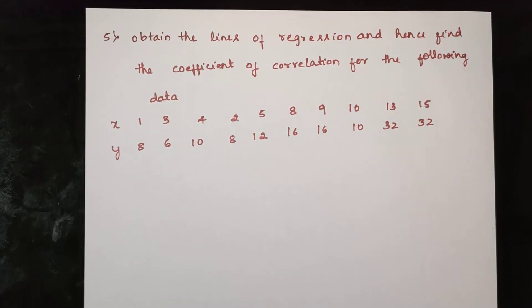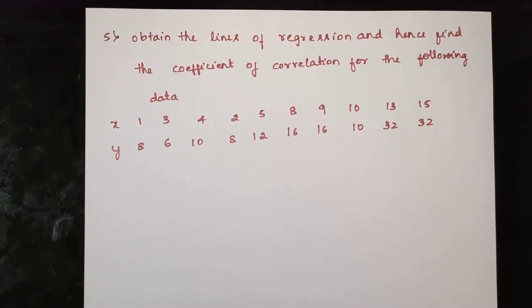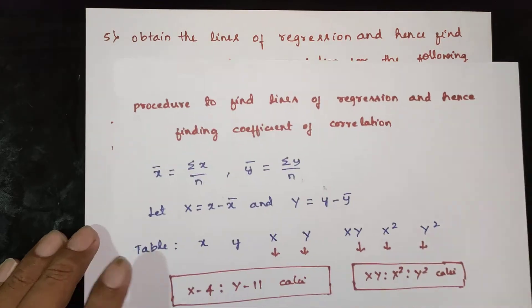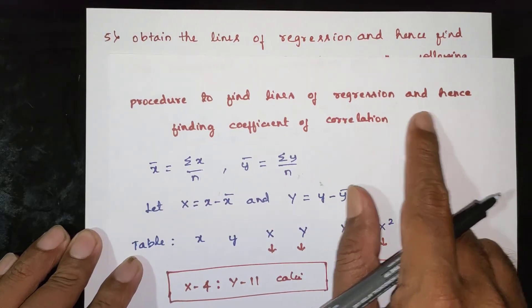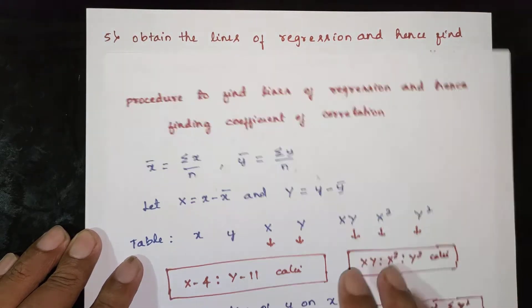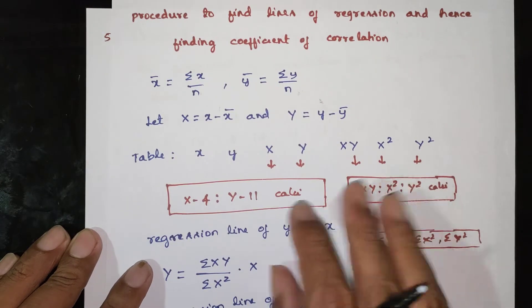Question: Obtain the lines of regression and hence find the coefficient of correlation for the following data. Now the procedure to find lines of regression and hence finding the coefficient of correlation — let us go through this procedure.